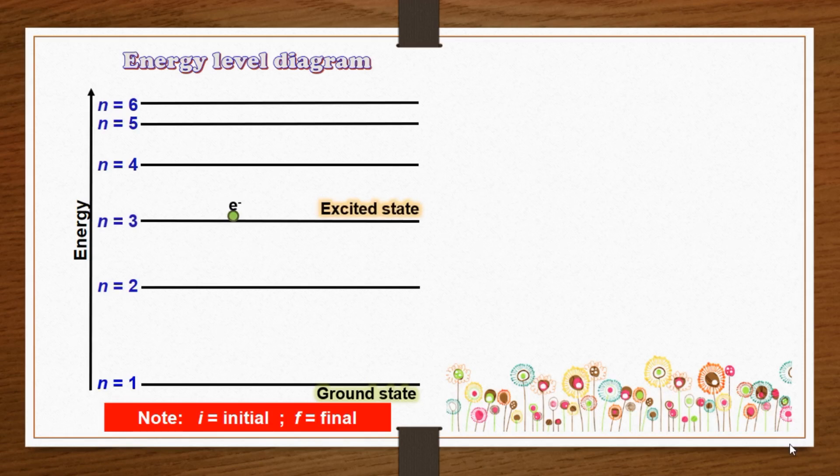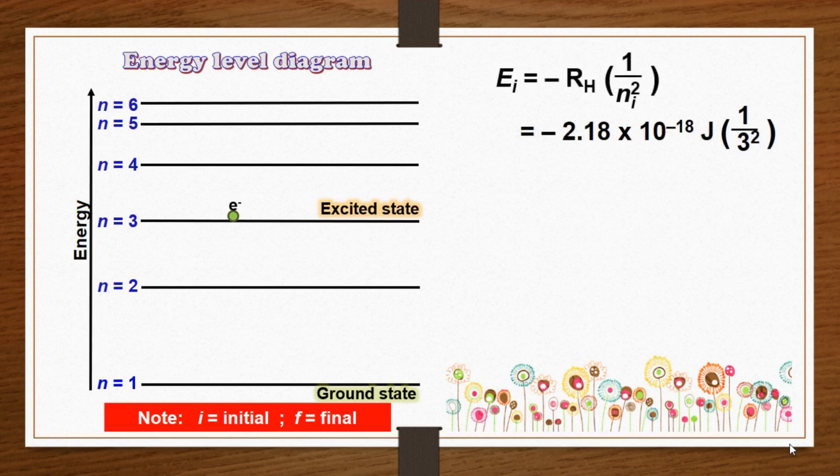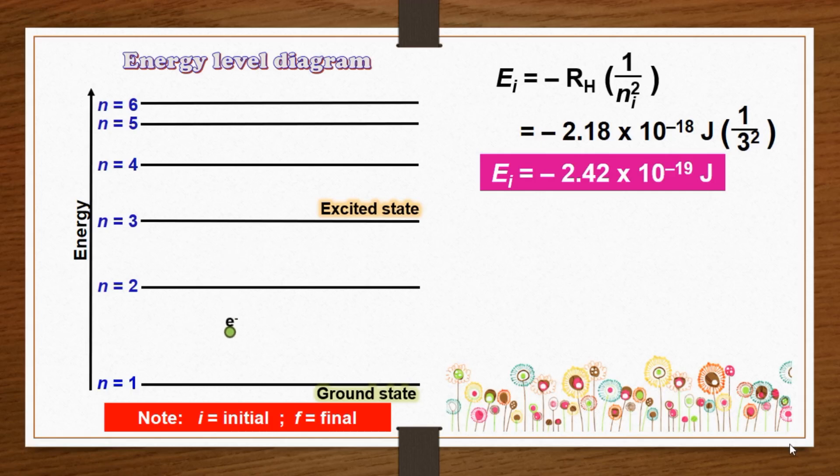By applying the previous equation to the emission process in a hydrogen atom, let us assume that the electron is initially at the excited state characterized by the symbol Ni. During emission, the electron drops to a lower energy level characterized by the symbol Nf.